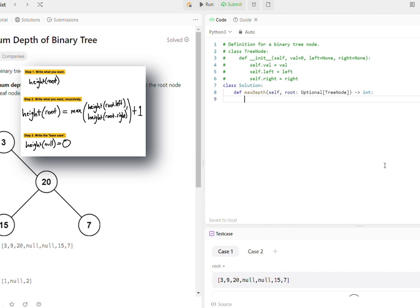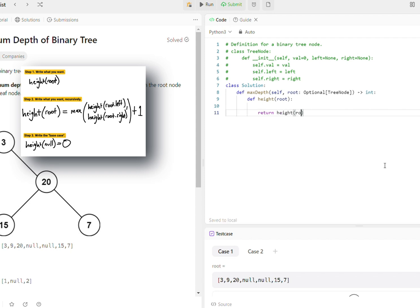In order to code this up, we want to write down height of root, and we want to tell the computer to use the recursion we just came up with. The only time we don't want to apply this recursion is if we're in the base case. And remember, the base case happens when the node is null, in which case we want to return zero.